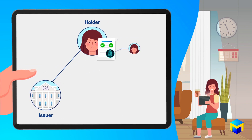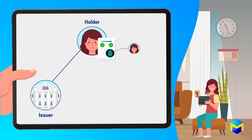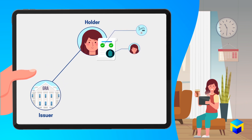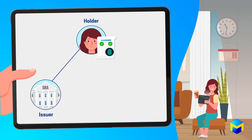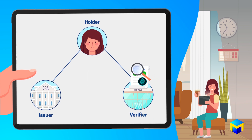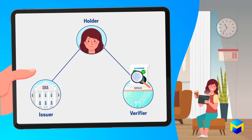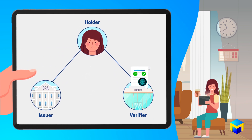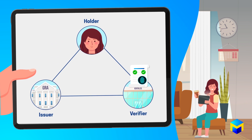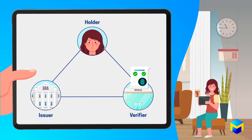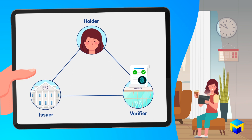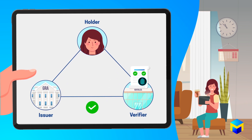The VC includes your DID along with a cryptographic signature of the GRA. You present the VC to RentalCo and disclose only the information it needs to check the VC against a trust anchor ledger, to verify that the GRA in fact issued the VC and that it has not been modified or revoked. Once RentalCo verifies the VC, you can move forward with the rental process.